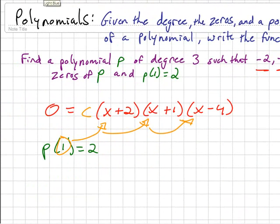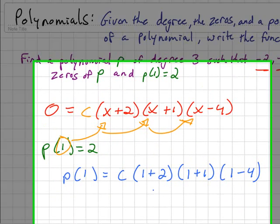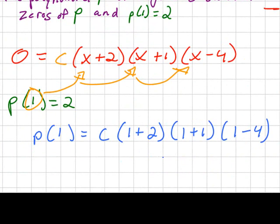So that gives me this value right here. P(1) = c, and I substitute: (1+2)(1+1)(1-4). When I equate that out, I end up with -18c. I have to distribute that through.